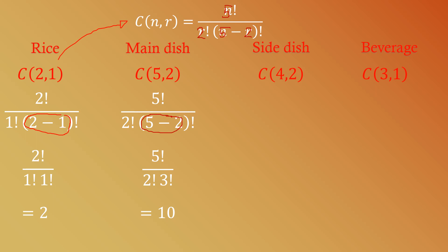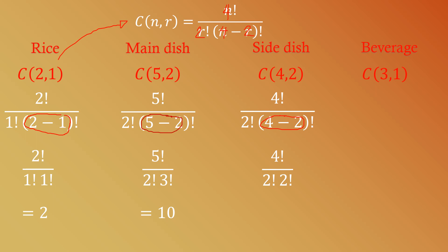For the side dish, C(4,2): n equals 4, r equals 2. So we have 4! over 2! times (4−2)! = 4! over 2! times 2!. Computing this properly gives us 6.